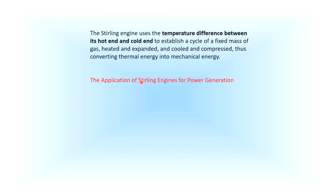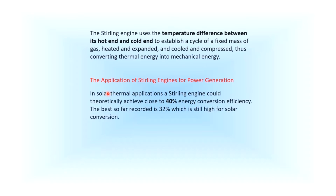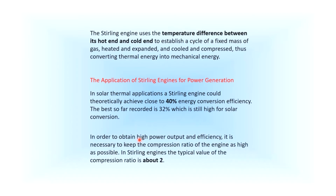In solar thermal applications, a Stirling engine could theoretically achieve close to 40% energy conversion efficiency. The best so far recorded is 32%, which is still high for solar conversion. In order to obtain high power output and efficiency, it is necessary to keep the compression ratio of the engine as high as possible. In Stirling engines, the typical value of compression ratio is about 2.